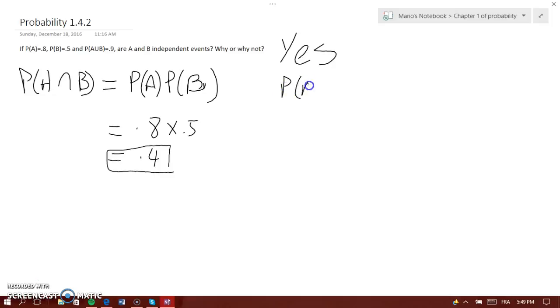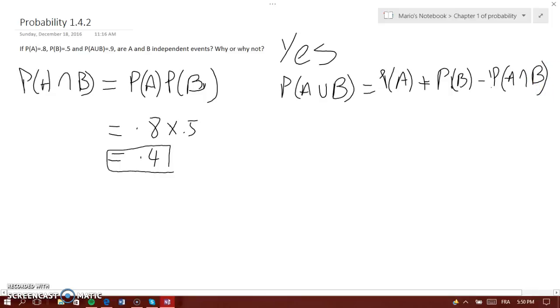Now to prove that this is right, we have to find P(A union B), and this has to equal 0.4. We use P(A union B) equals P(A) plus P(B) minus P(A intersection B). This has to equal 0.4. So let's do this: P(A) is 0.8 plus P(B) is 0.5.